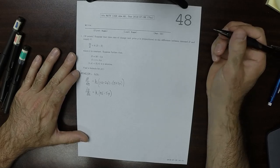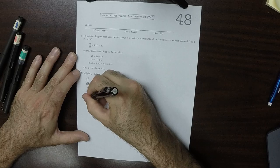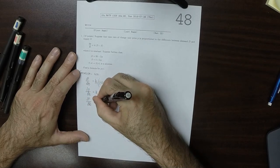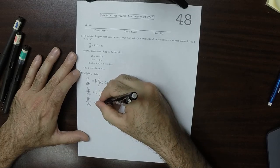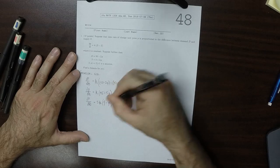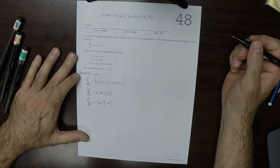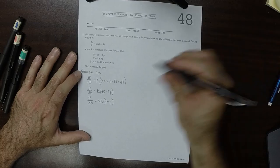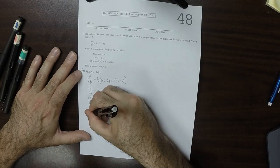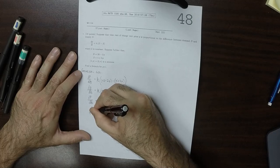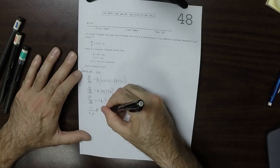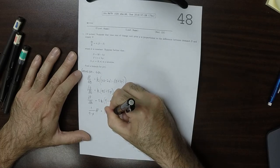Just to make our lives a little bit simpler, factor out a 5 and get 5k multiplied by 9 minus p. Then we can separate the variables and get 1 divided by 9 minus p dp is equal to 5k dt.